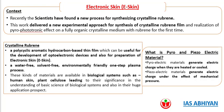What is crystalline rubberine? Crystalline rubberine is a polycyclic aromatic hydrocarbon-based thin film which can be useful for the development of optoelectronic devices and also for the preparation of electronic skin. The crystalline rubberine uses a water-free, solvent-free, environmentally friendly one-step plasma process. The work delivered a new experimental approach for synthesis of crystalline rubberine film and a realization of the pyrophototronic effect.